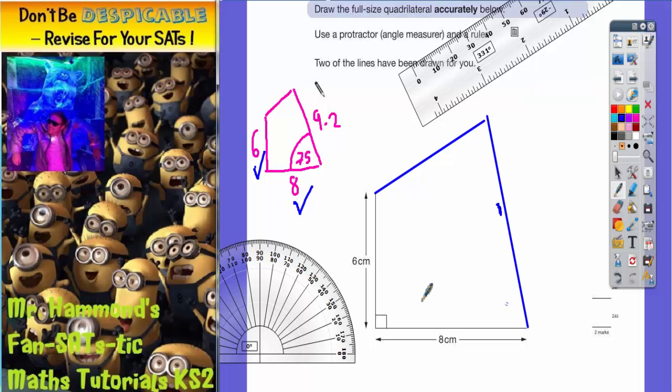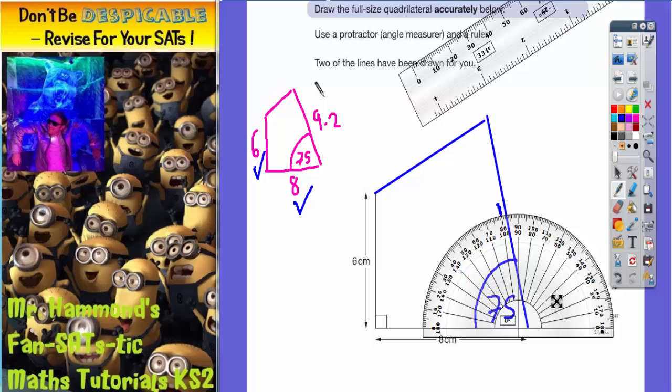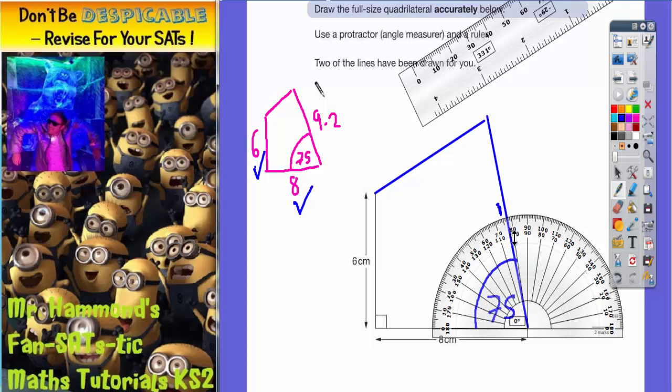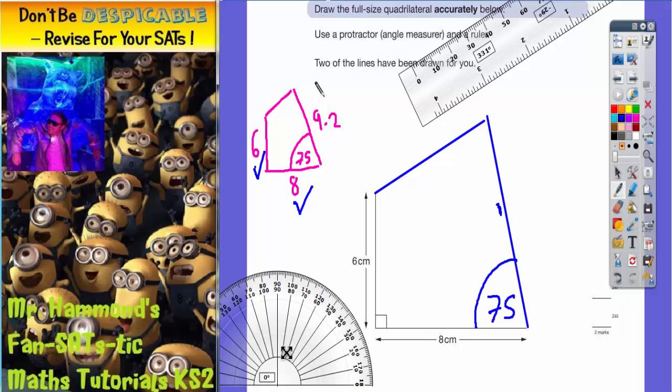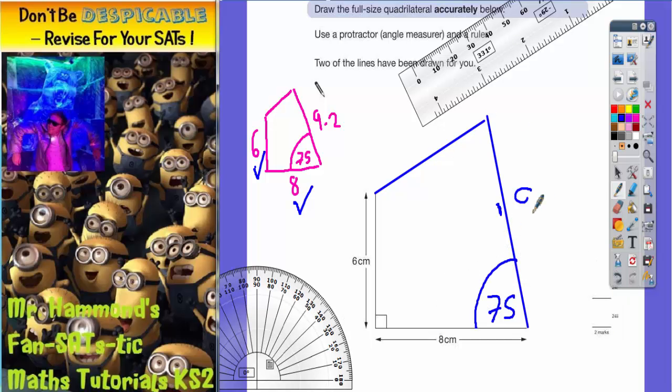Good idea to label everything: the 6cm we've done, the 8cm we've done, the 75 degrees we measured accurately—quick check, yes, that's 75 degrees—and the ruler measured 9.2 centimeters. That's the question finished.